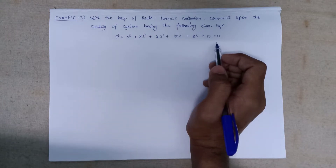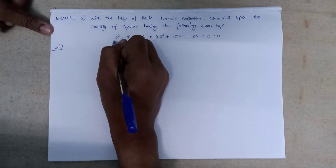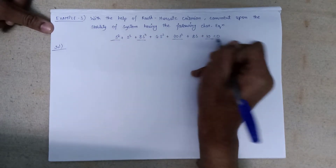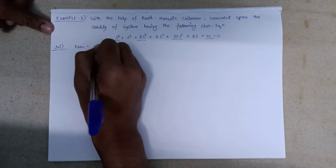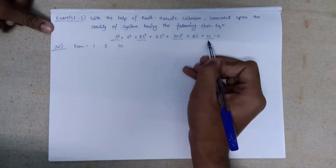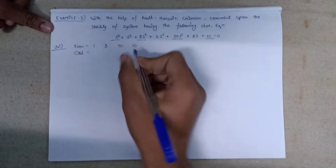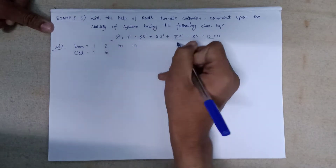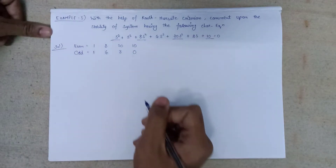First we will perform the formation of a Routh Array, then check the stability. The even coefficients correspond to s⁶, s⁴, s², and s⁰: the coefficient of s⁶ is 1, of s⁴ is 8, of s² is 20, and of s⁰ is 10. The odd coefficients of s⁵ and s³ and s¹ are 1, 6, 8, and the remaining is 0.